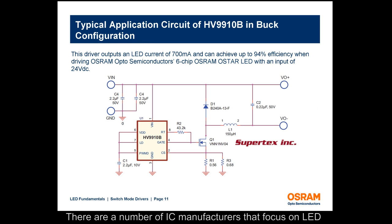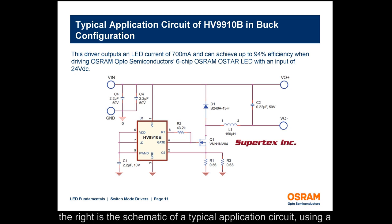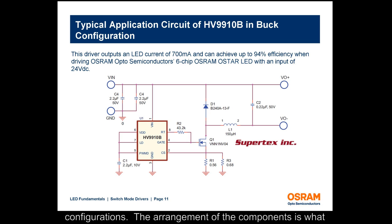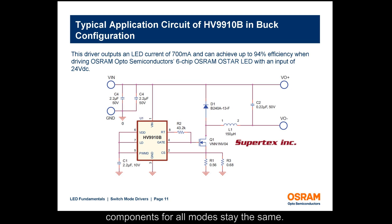There are a number of IC manufacturers that focus on LED drivers. Shown on the right is the schematic of a typical application circuit using a SuperTex HV9910B, a buck driver IC. In many cases, the same driver IC can be configured to operate in buck, boost, or single-ended primary inductance converter configurations. The arrangement of the components is what changes in these different configurations, while the basic components for all modes stay the same.